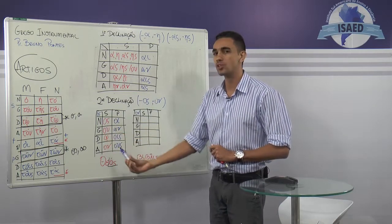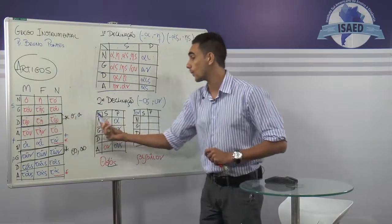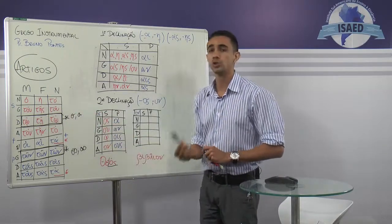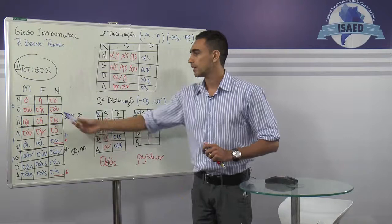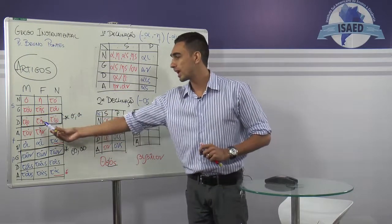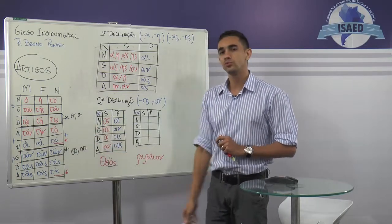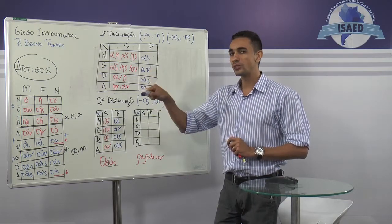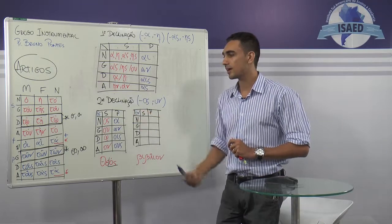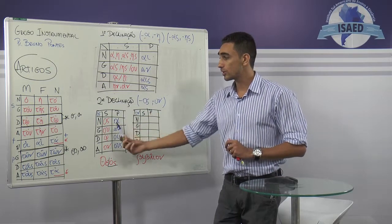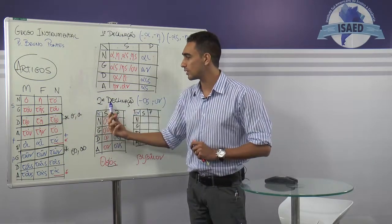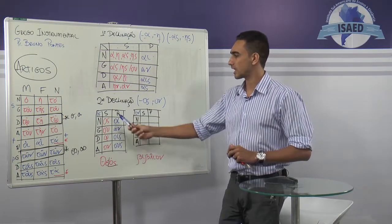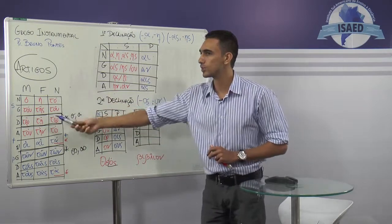Segue-se o gênero, segue-se o número, segue-se o caso, mas a declinação ela permanece — mesmo que os artigos sejam diferentes. Ou seja, ela segue o caso, o número e a ideia do gênero, mas mesmo sendo de gênero diferente, não muda a declinação. É isso que eu tenho que entender.